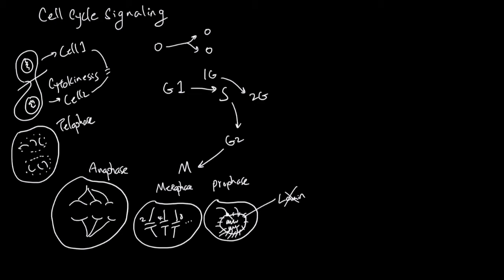Just to review: mitosis starts with prophase — breaking down the envelope and allowing microtubules to access the nuclear material. Then metaphase, where the microtubules align the sister chromatids. Then anaphase, where the microtubules pull the sister chromatids apart. Then telophase, where the pulled sister chromatids start to form their nuclear envelope. And finally, cytokinesis, where the cellular membrane divides, and you now have two identical cells.